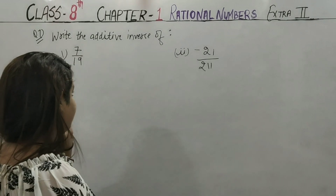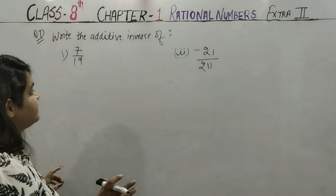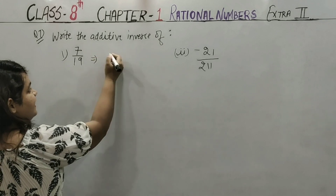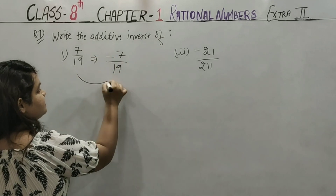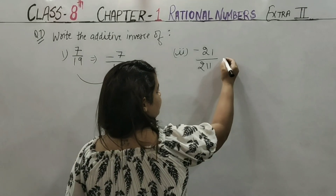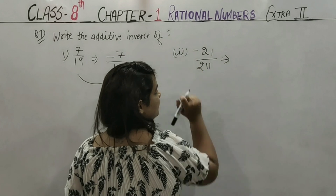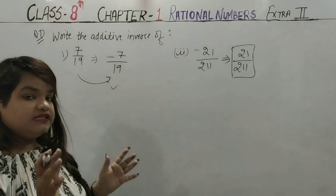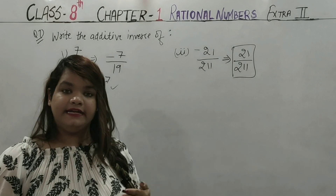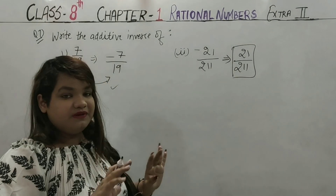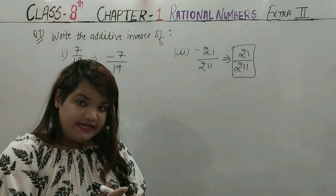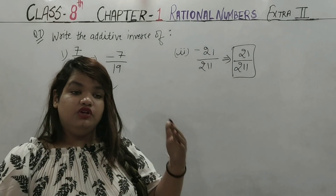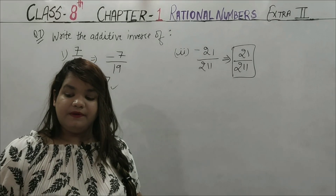Question No. 7 says: write the additive inverse of 7/9 and −21/21. Additive inverse means only change the sign. For 7/9 (positive fraction), additive inverse is −7/9. For −21/21 (negative fraction), additive inverse is +21/21. Remember: additive inverse = sign change only. Multiplicative inverse (reciprocal) = swap numerator and denominator. Never confuse the two.